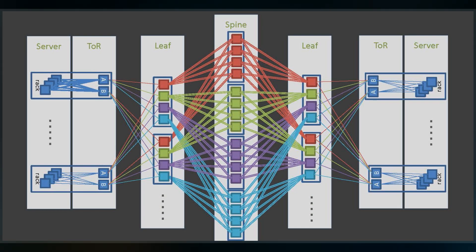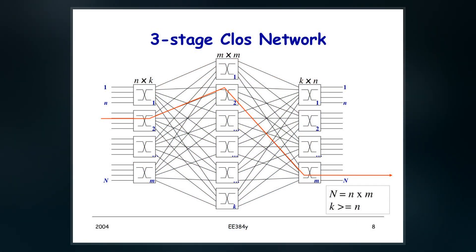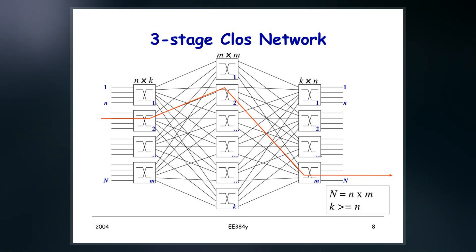By adding stages, a Clos network reduces the number of crosspoints required to compose a large crossbar switch. A Clos network topology is parameterized by three integers: n, m, and r.